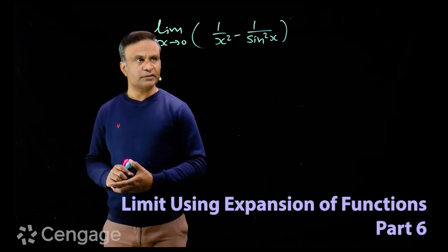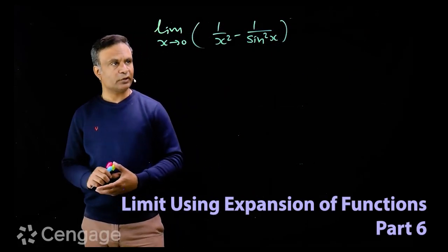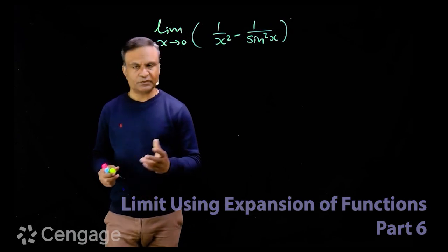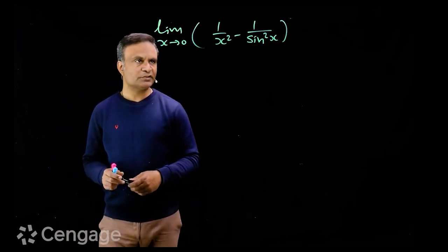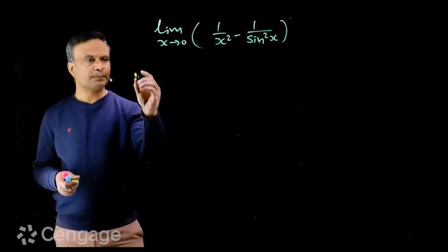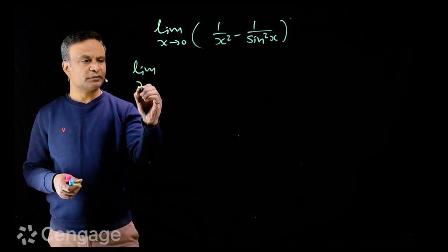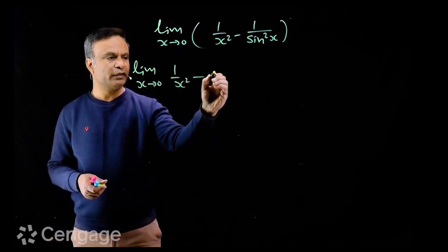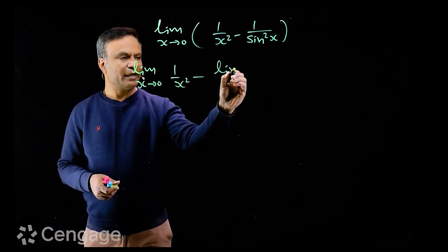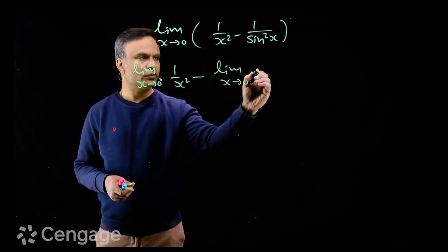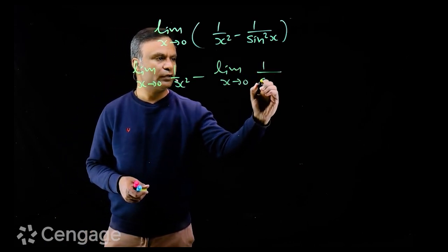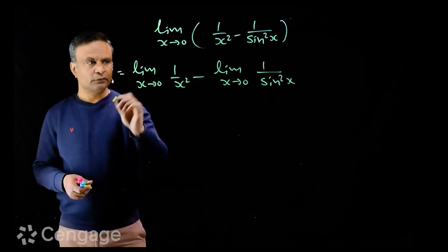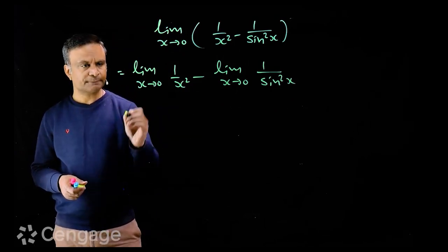Let's evaluate this limit: limit as x tends to 0 of 1/x² minus 1/sin²x. We can distribute the limit, writing it as the limit of 1/x² minus the limit of 1/sin²x.